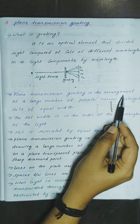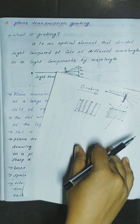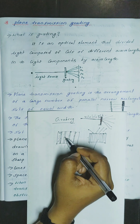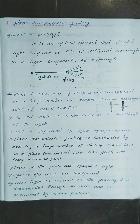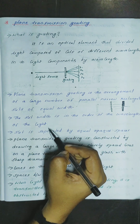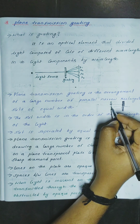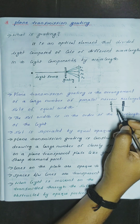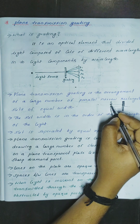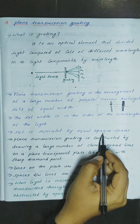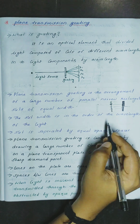Plane transmission grating is the arrangement of a large number of parallel narrow rectangular slits of equal width. The slit width is in the order of the wavelength of the light. The slits are separated by equal opaque spaces, alternating between transparent and opaque regions.